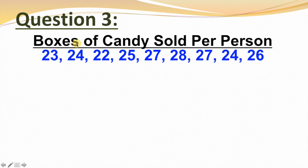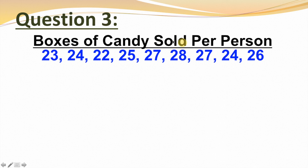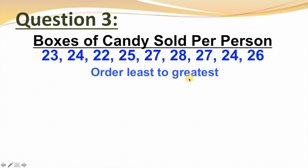Question three — boxes of candy sold per person. Each of these numbers represents a person, and the number itself represents how many boxes of candy that person sold. Before we make our line plot, the very first thing we should do is put our numbers in order from least to greatest. When we do it, it'll look like this. Then we'll just follow our step-by-step process.